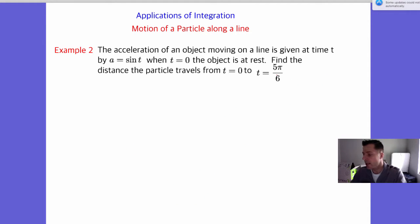Now let's look at another example. The acceleration of an object moving along a line is given at time t by a equals sine of t. When t equals zero, the object is at rest. So that's cool. We got v(0) equals zero. Now, they want to know, find the distance the particle travels from t equals zero to t equals five pi over six.